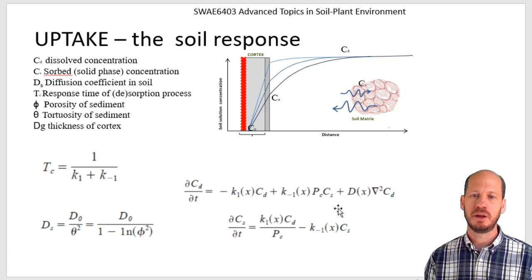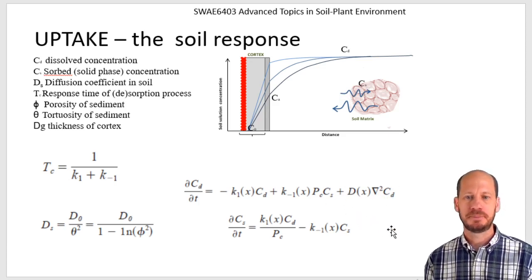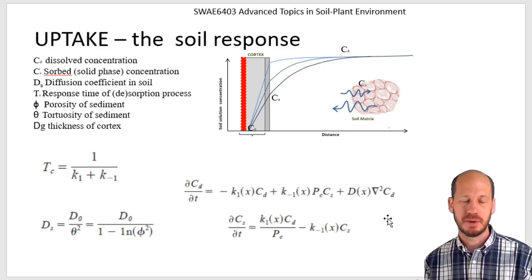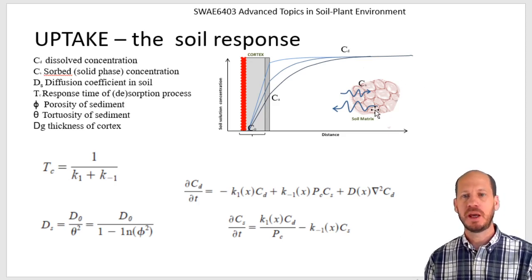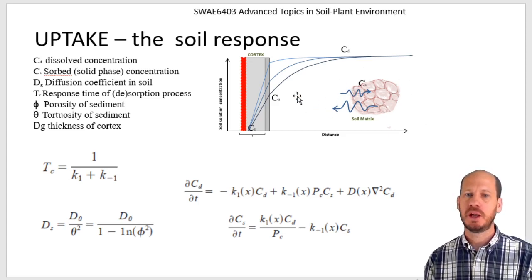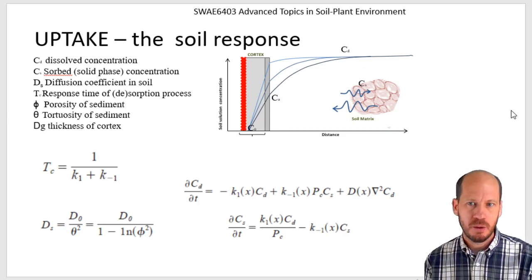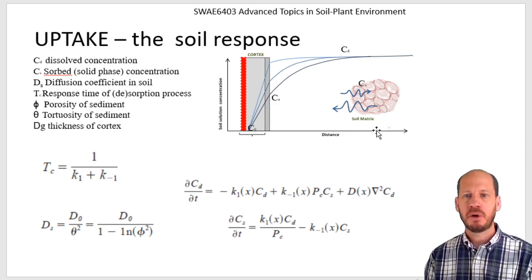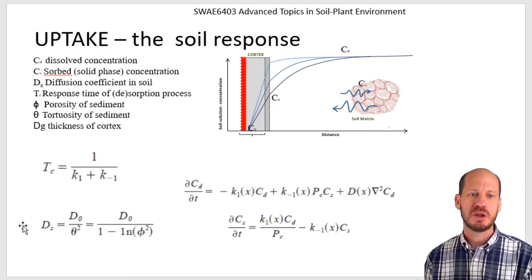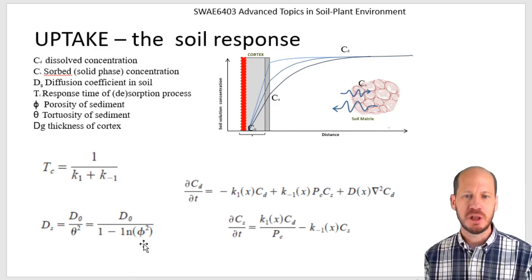Tortuosity describes how long the pathway a solute must travel through the soil matrix is, compared to a straight line in water. The solute must navigate around particles and air pockets, making the actual path much longer. Tortuosity is a function of soil porosity.